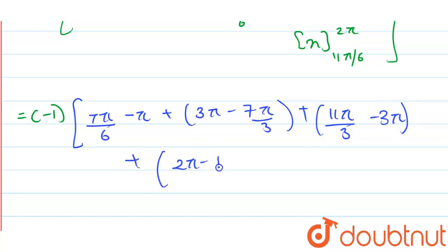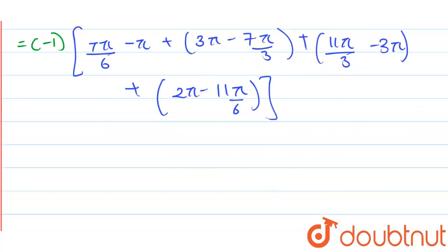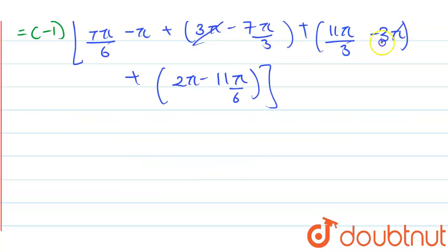Plus 11 pi by 3 minus 3 pi, plus 2 pi minus 11 pi by 6 here. Further from this, 3 pi and 3 pi will get cancelled, so you are left with...